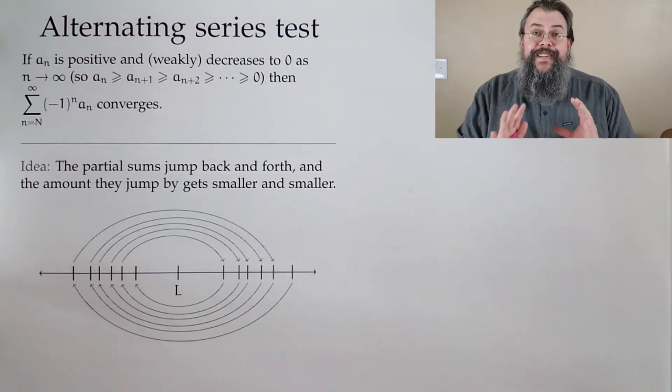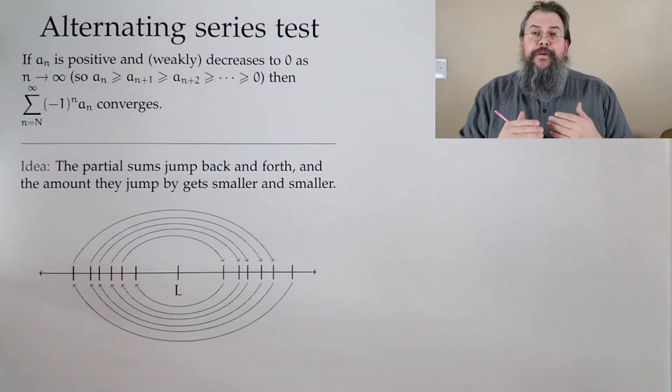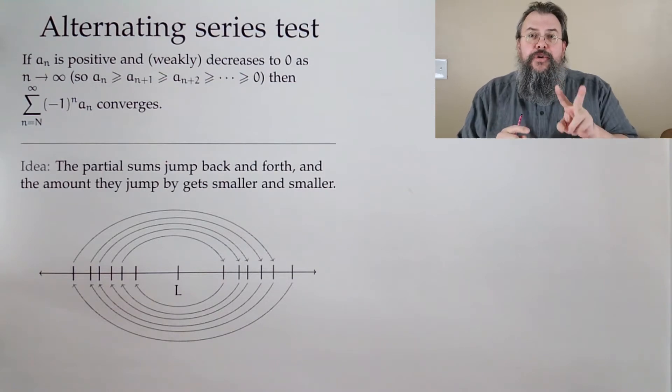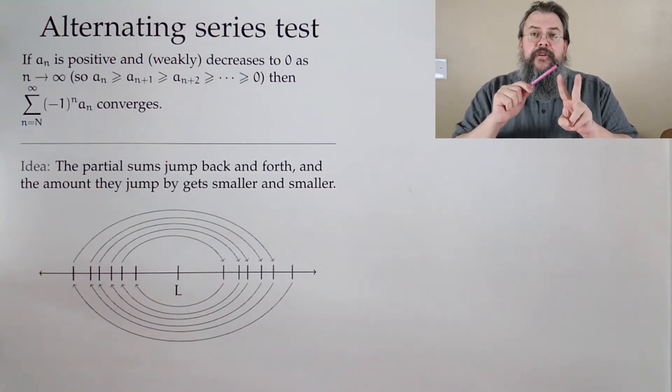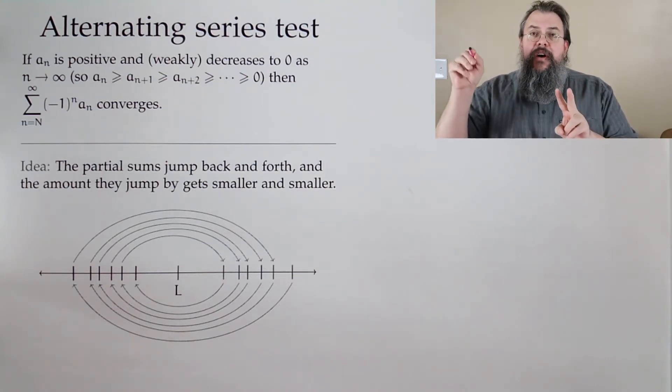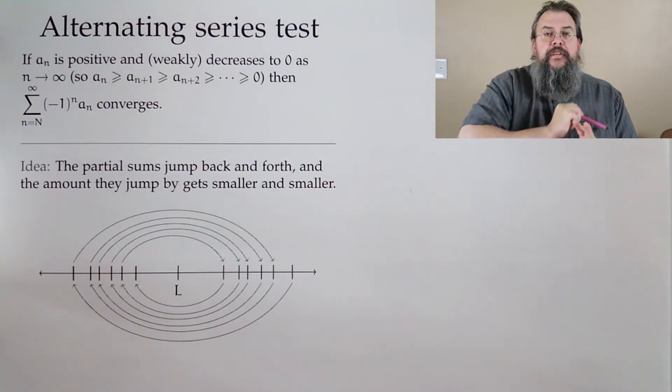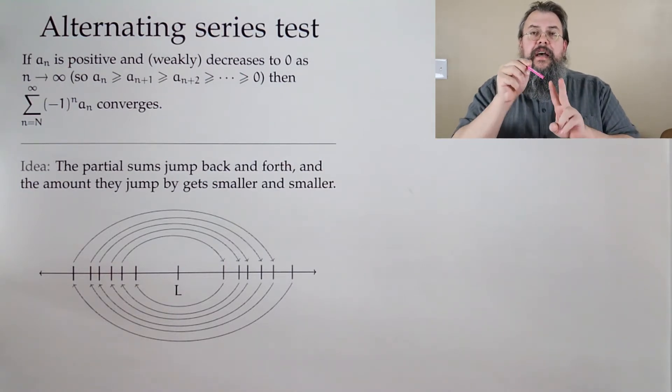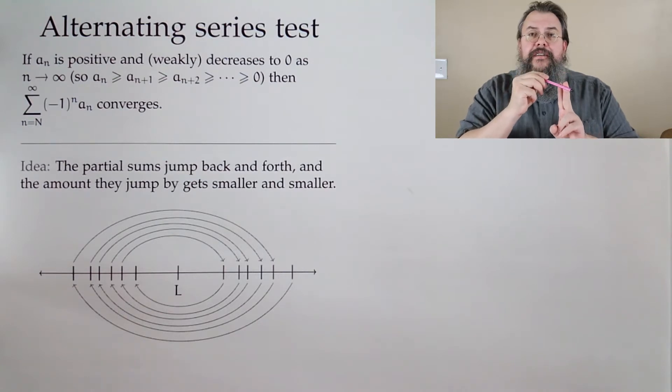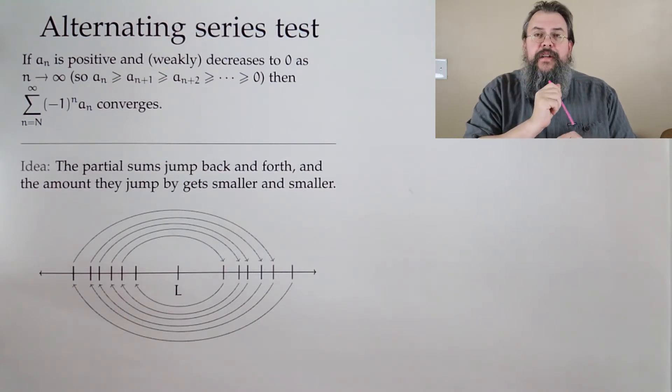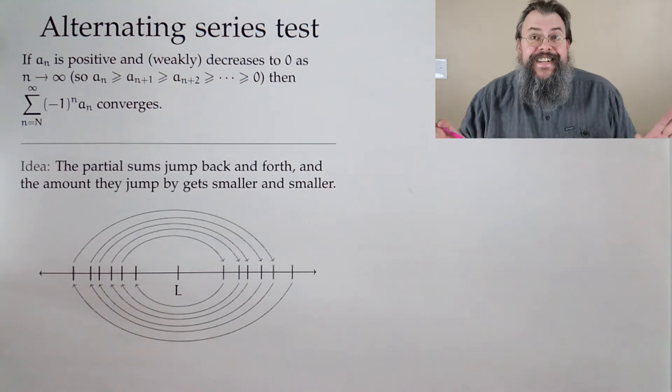This is amazing, right? Because think about how simple. We're just saying we need to have two things happen. The terms have to go to zero. So, the terms, as you go increasing for n, get smaller and smaller. And they have to alternate sign. Plus, minus, plus, minus, plus, minus. And that's it!